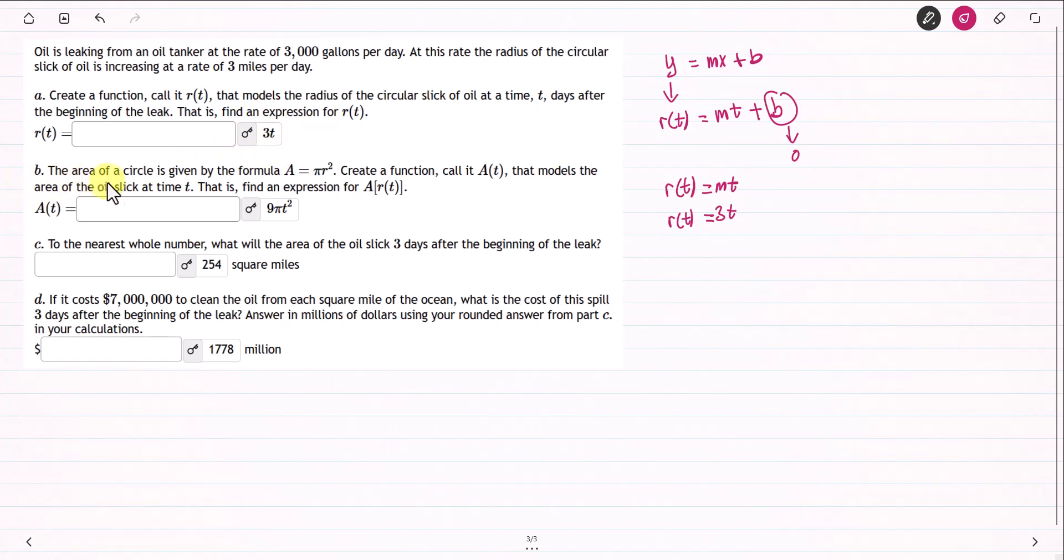Part B. The area of a circle is given by the formula A equals pi r squared. They want you to create a function, call it A of t, that models the area of the oil slick at time t. Find the expression for A of t.